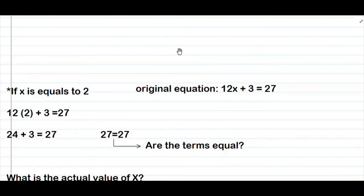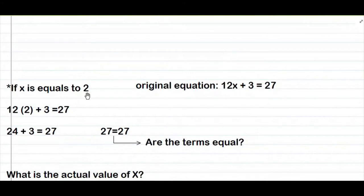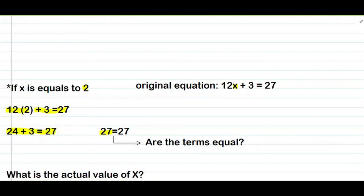Ito pa rin yung equation kanina. If x equals to 2 naman — yung 2 na to, isusubstitute dito sa place nung x. 12 times 2 plus 3 equals 27. 12 times 2 is equals to 24, plus 3, equals 27. 24 plus 3 is equals to 27, copy yung 27. Are the terms equal?